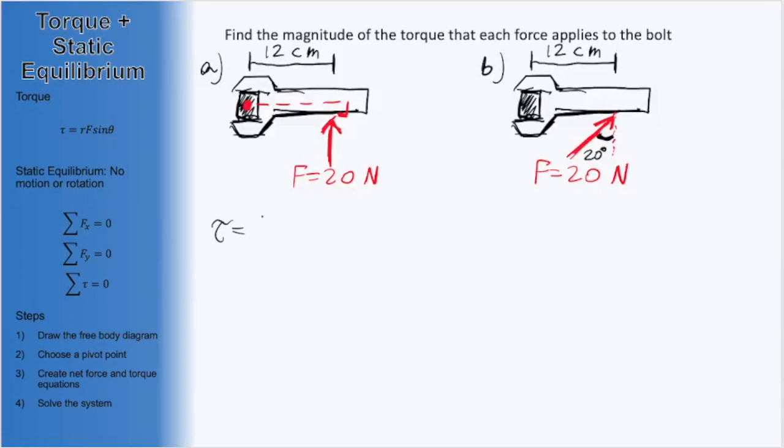We know the radius is 12 centimeters, which we would want to convert to 0.12 meters. The force is just 20 Newtons, and we have to multiply by the sine of the angle, which as we discussed is 90 degrees for this one. In this case, we get a torque equal to 2.4 Newton meters. So there's the torque for part A, where we are applying a force that is perpendicular to the wrench itself.